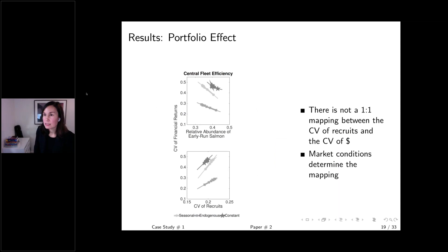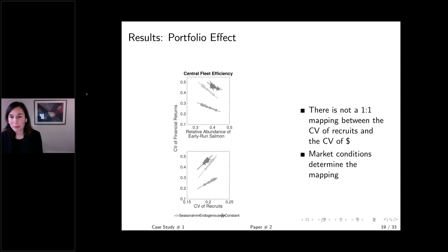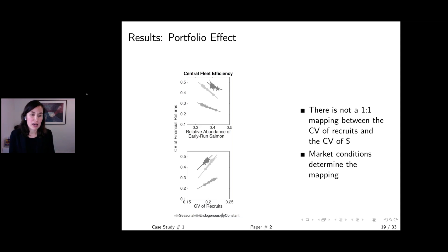Finally, we look at variability in financial returns versus variability in physical returns (salmon). The key point is that there is not a one-to-one mapping between the coefficient of variation in salmon returning to the fishery and how variable economic returns are — the mapping depends heavily on market conditions in the fishery.